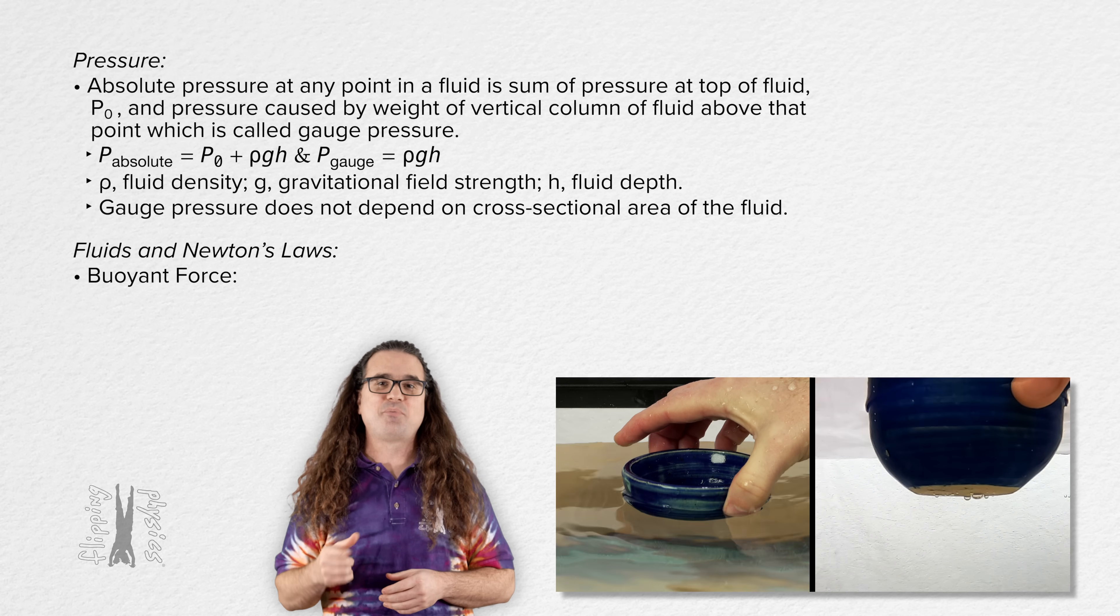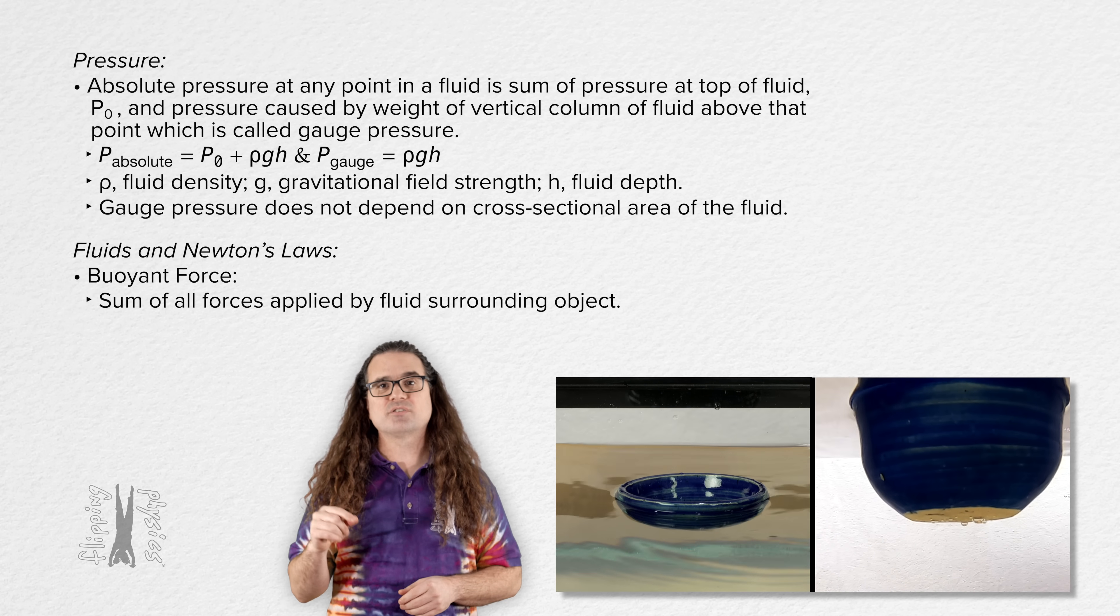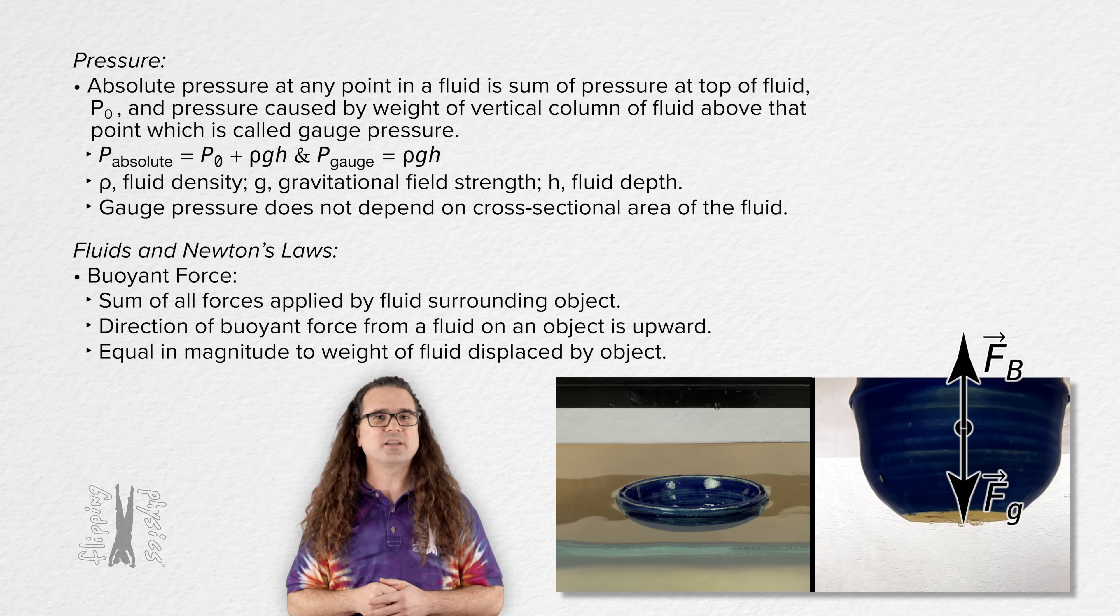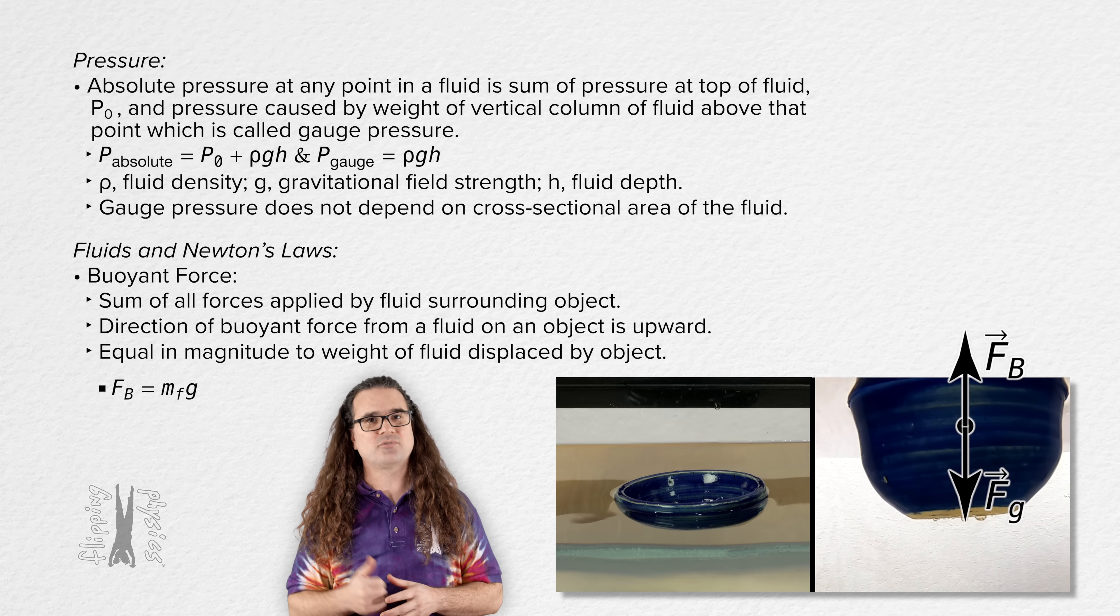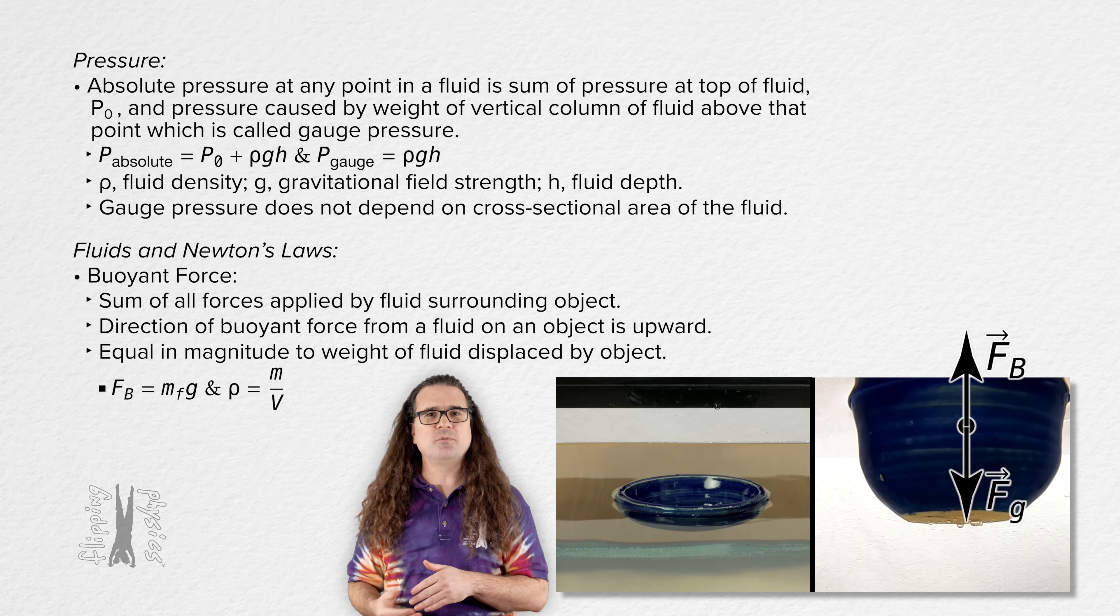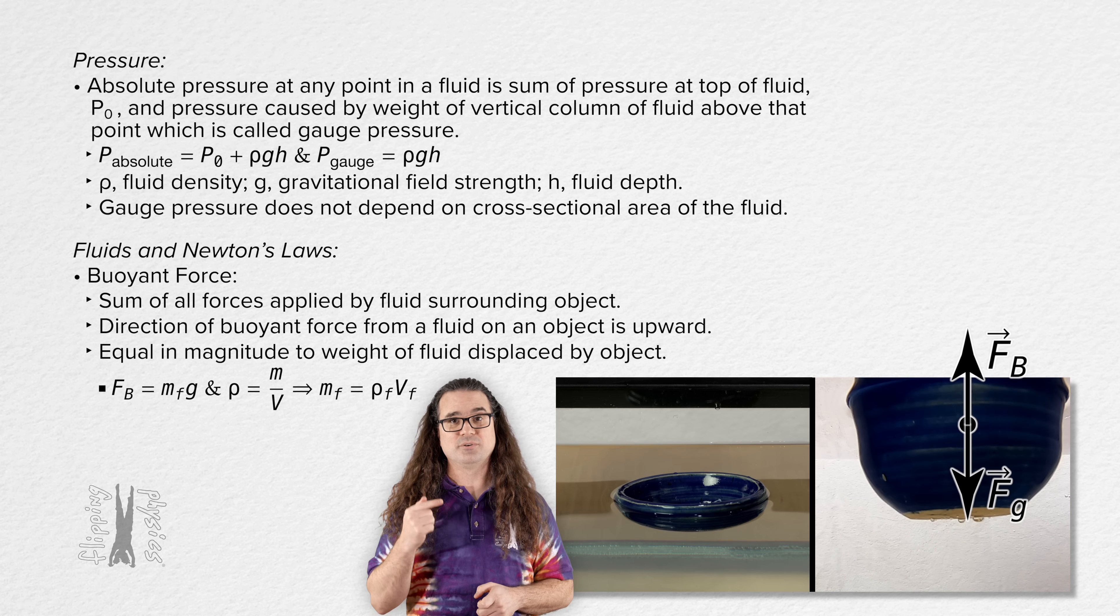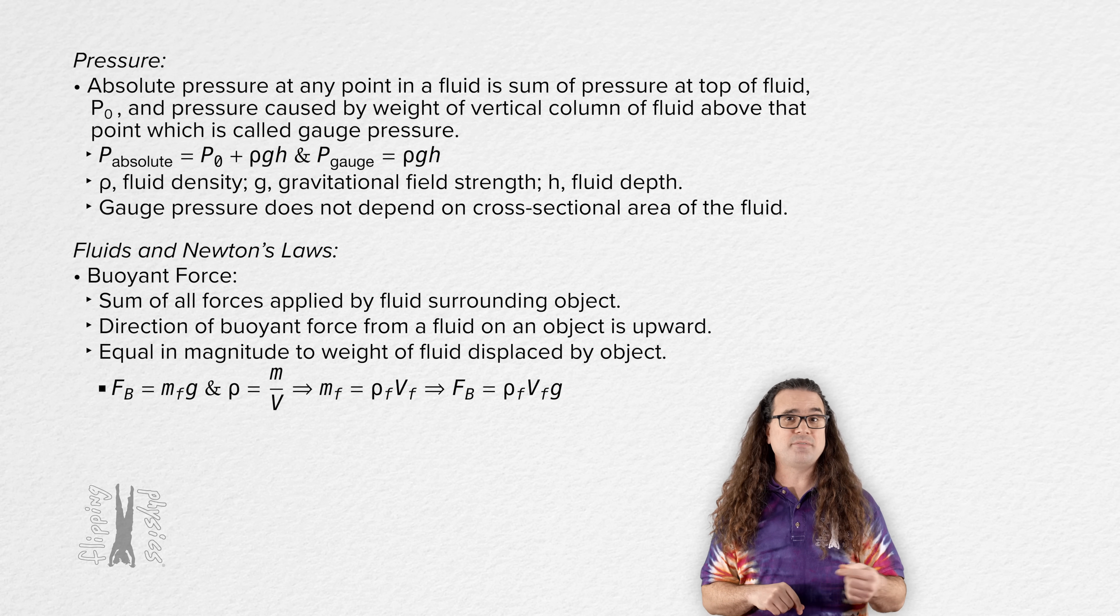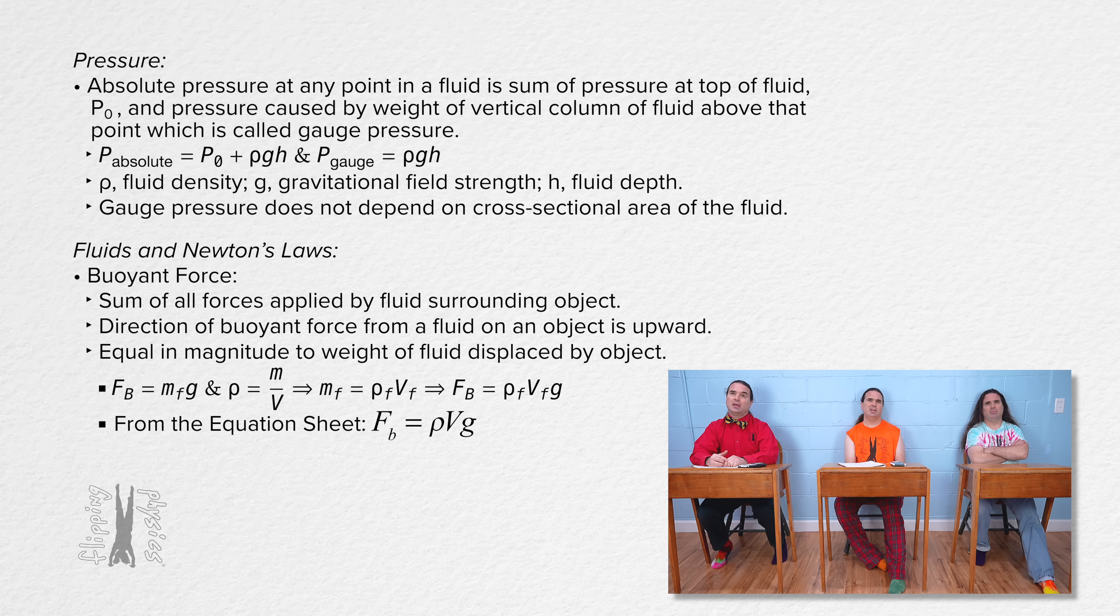Next up is the buoyant force. The buoyant force is the sum of all the forces applied by the fluid surrounding the object. The direction of the buoyant force from a fluid on an object is upward, and the buoyant force is equal in magnitude to the weight of the fluid displaced by the object. In other words, the buoyant force equals the mass of the fluid displaced by the object times the gravitational field strength. Because density equals mass divided by volume, we know the mass of the fluid displaced by the object equals the density of the fluid displaced by the object times the volume of the fluid displaced by the object. Therefore, the buoyant force equals ρ_f times V_f times g. That equation is on the equation sheet, right? Yeah, why would he derive it like that?